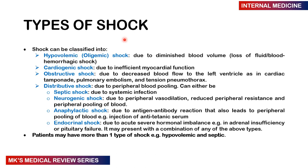Cardiogenic shock is due to inefficient myocardial function. Obstructive shock is due to decreased blood flow to the left ventricle as a result of cardiac tamponade, pulmonary embolism, or tension pneumothorax. Distributive shock is attributed to peripheral pooling of blood. This includes septic shock due to systemic infection; neurogenic shock due to peripheral vasodilation, reduced peripheral resistance, and peripheral pooling of blood; anaphylactic shock, which is an antibody-antigen reaction — for example, from an injection of anti-tetanic serum; and endocrinal shock due to acute severe hormonal imbalance, such as in adrenal insufficiency or pituitary failure, which may present with a combination of the above types of shock.